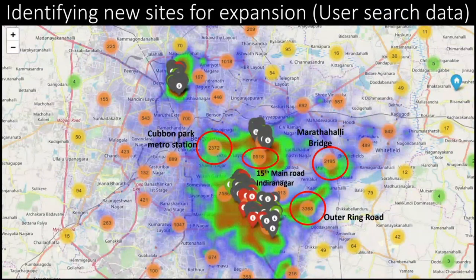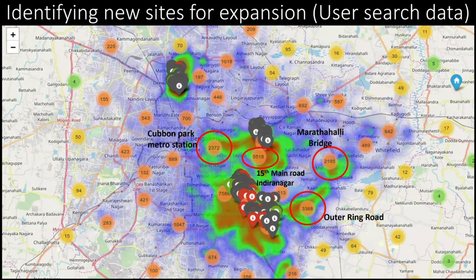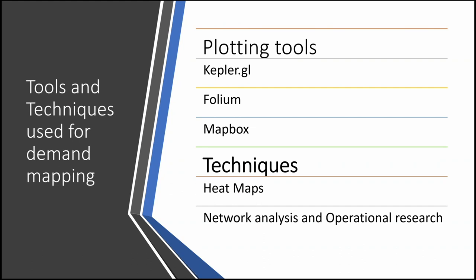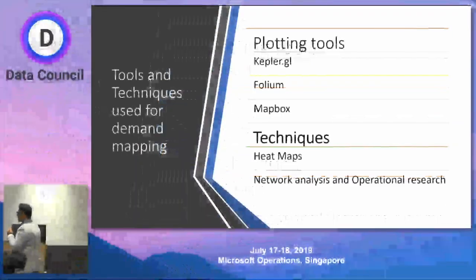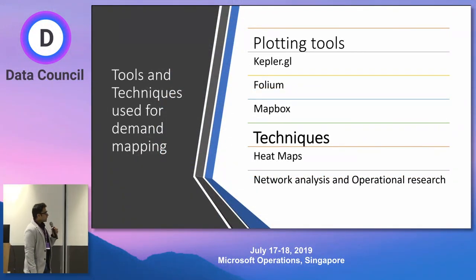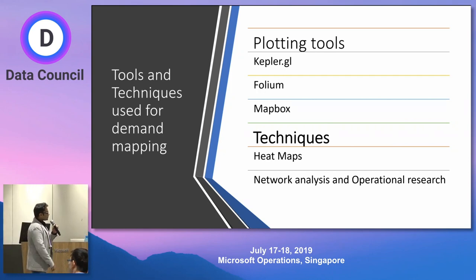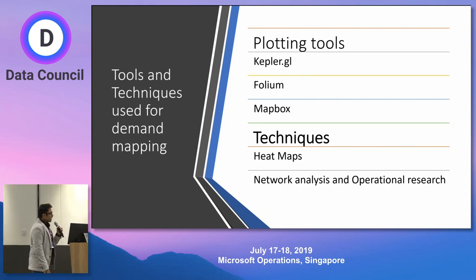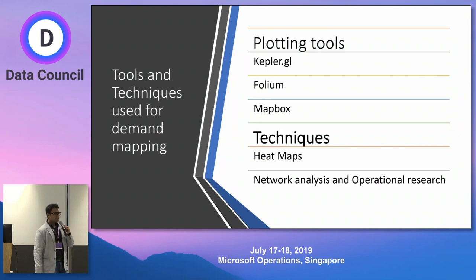Now, how do you identify new sites for expansion across the city? This is the map for complete Bangalore. There are areas like Marathali Bridge with a lot of people searching for bikes but no stations. The red, grey, and green dots are existing stations. We can see many heat areas with many searches but no bicycles — those are the areas we need to expand next. Tools used include Kepler.gl — an open source tool powered by Uber — Folium, Mapbox for geospatial layering, heat maps, and linear programming as part of operational research.